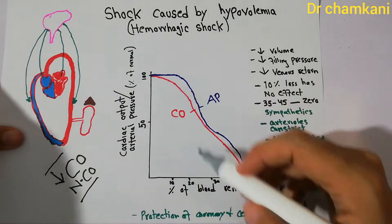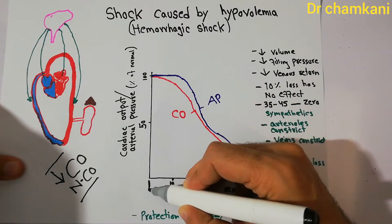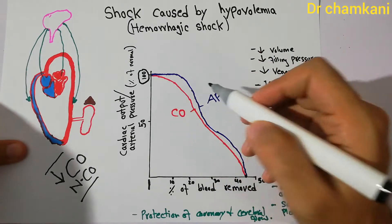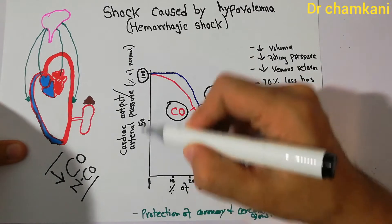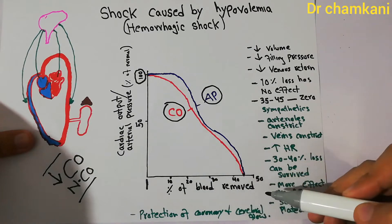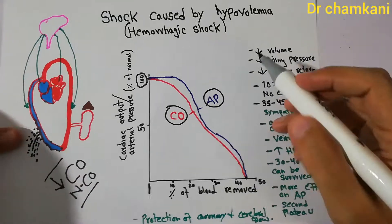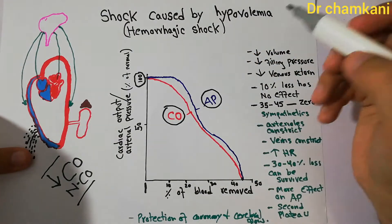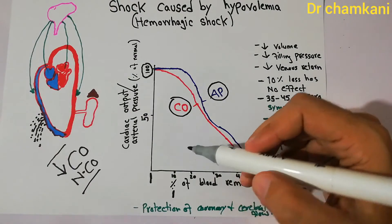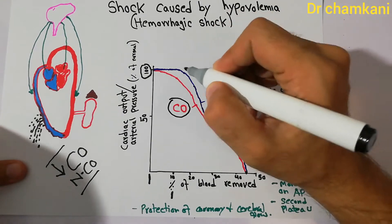Consider a human body in which blood loss is occurring. Up to 10% of blood removed from the body results in almost no change in arterial pressure or cardiac output. At this point, both cardiac output and arterial pressure are at 100% of normal, as shown on the y-axis of the graph. The arterial pressure especially will show almost no change up to 10% blood loss.